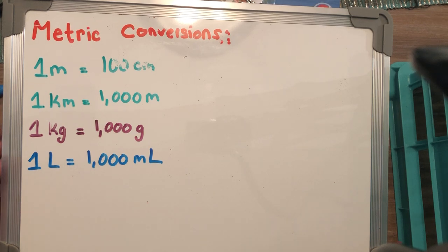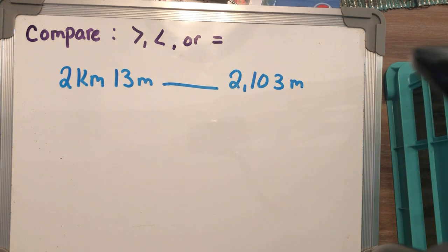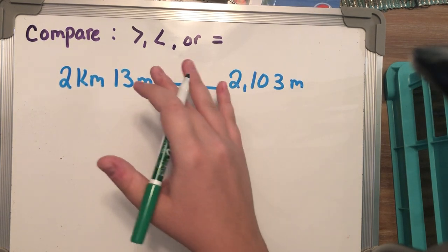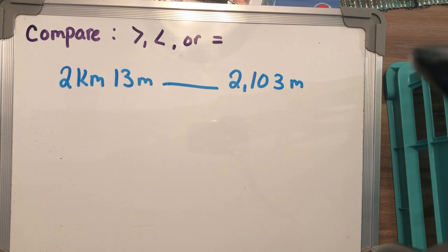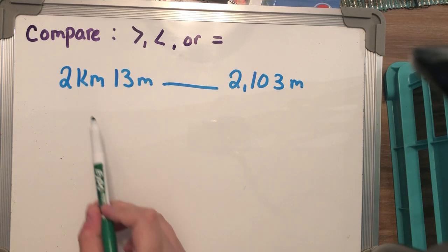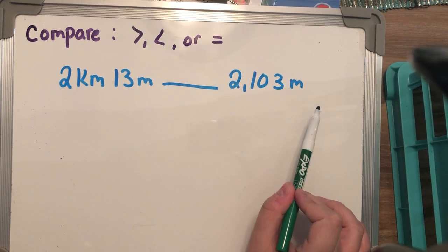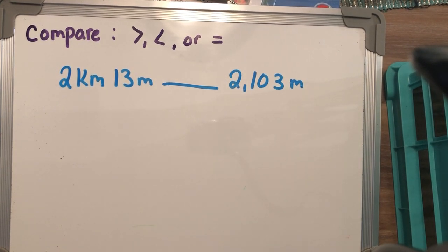Let's get started with our first problem. We are comparing using greater than, less than, and equal to signs. I have written down 2KM 13M, and this line is going to tell us what symbol to put in, compared to 2,103 meters. There are two different ways we can go about solving this problem. We could either turn 2KM 13M into all meters, or we could turn 2,103 meters back into its smaller units, and I'm going to show you how to do both.